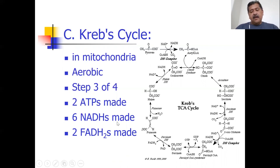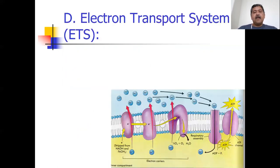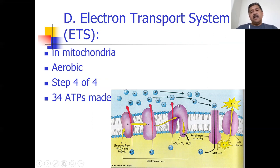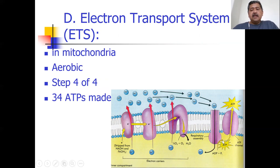From glycolysis and the oxidation of pyruvate you've got four more NADHs coming in — four times three is 12. So the electron transport system in the mitochondria is aerobic, it's the fourth step, and this is where 34 ATPs are actually made. You can see the proton pump — there's a chemical and osmotic gradient, and those protons want to go back into the matrix of the mitochondria through ATP synthase. As that happens, ATP is generated.